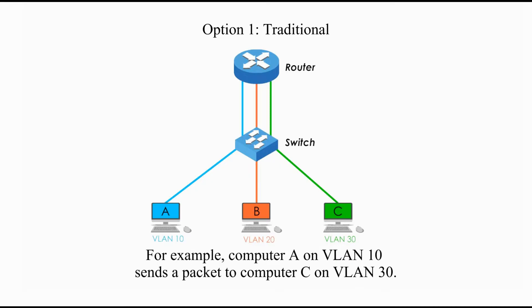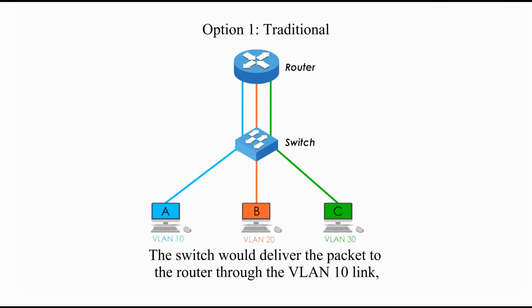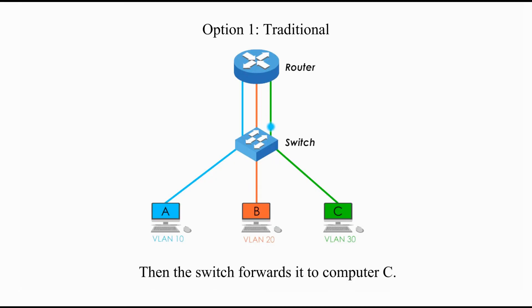For example, computer A on VLAN 10 sends a packet to computer C on VLAN 30. The switch would deliver the packet to the router through the VLAN 10 link, and the router forwards the packet to the switch through the VLAN 30 link. Then the switch forwards it to computer C. Routing and switching are achieved.